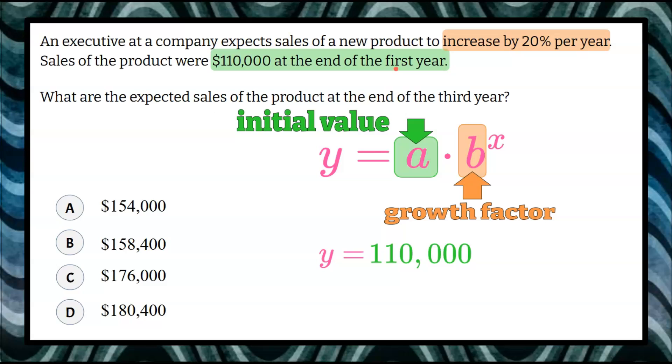So our growth factor needs to be greater than 100%, and we're going to write that as a decimal. 120% written as a decimal for the base of our power is going to be 1.20.